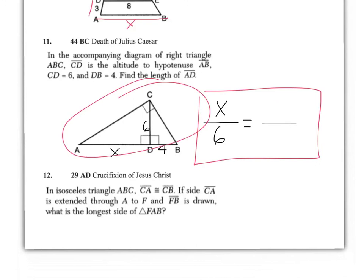If you set up the proportion wrong — for example, if you wrote x over 6 equals 4 over 6 — you'd end up getting x = 4. If you look at the picture, does that even look like 4? That's one way to check your answers on these questions: see if the answer makes sense in the picture.